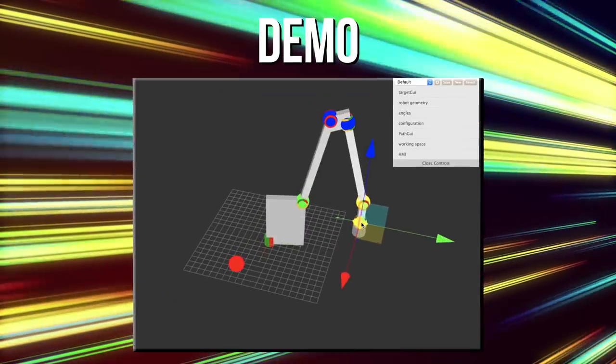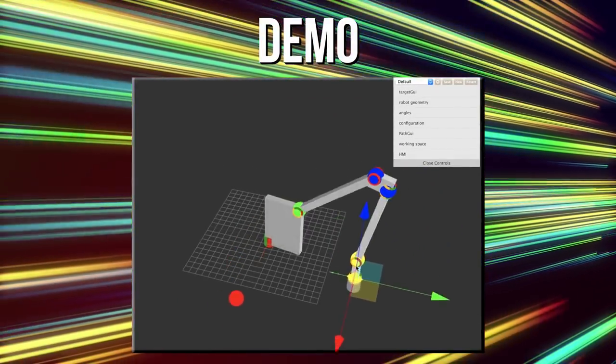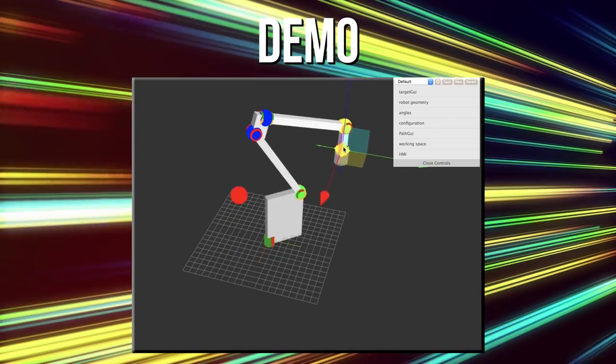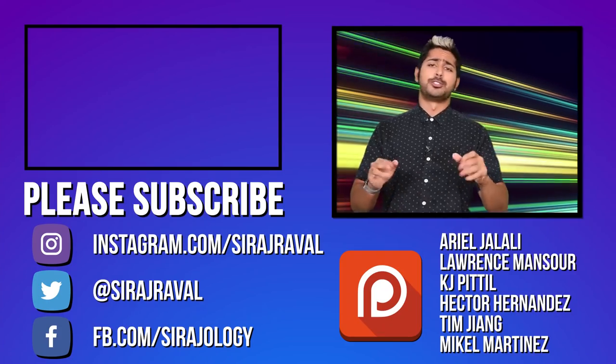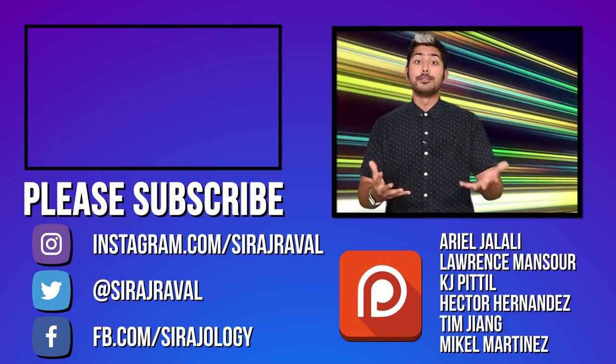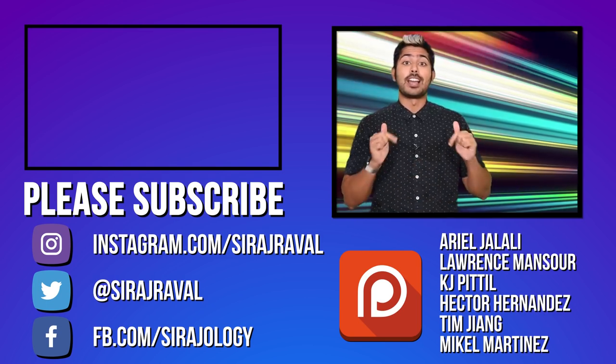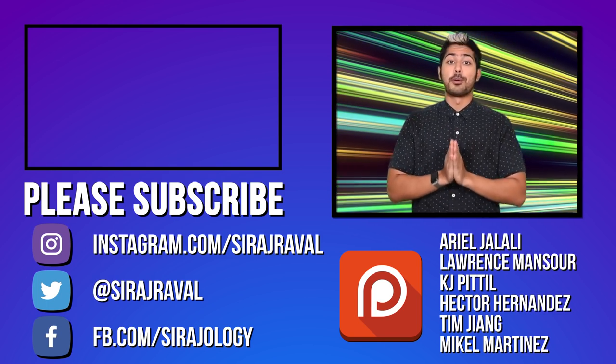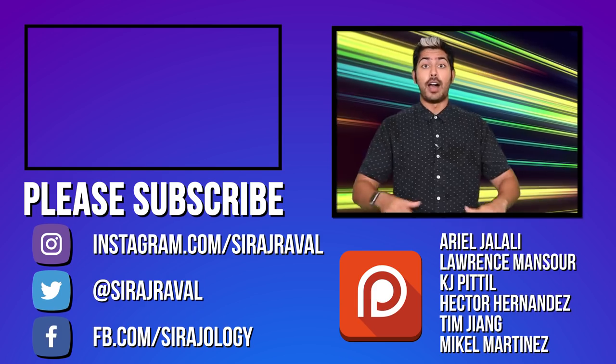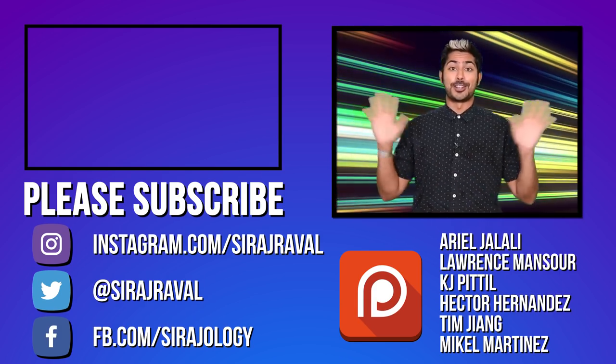Once we have these functions, we can easily click on a point in space and watch as our robot moves optimally to that point. I've got helpful links and code for you in the video description. Check it out. Robots are so big. Have you built one before? If so, share your experience with us in the comment section. I'd love to learn more. Please subscribe for more programming videos and for now, I've got to fly, so thanks for watching.